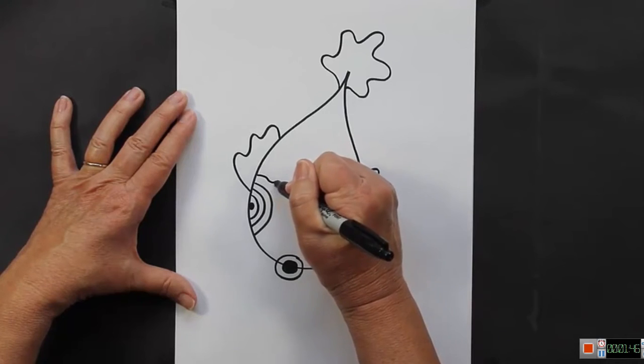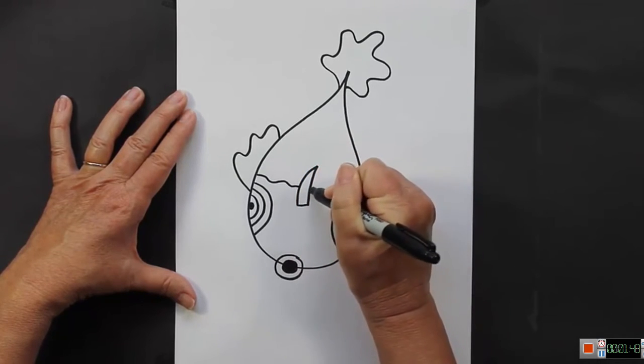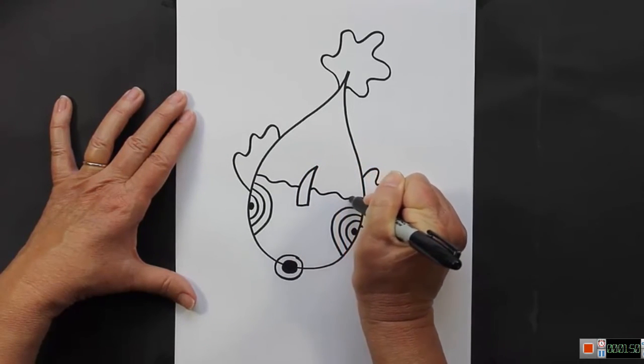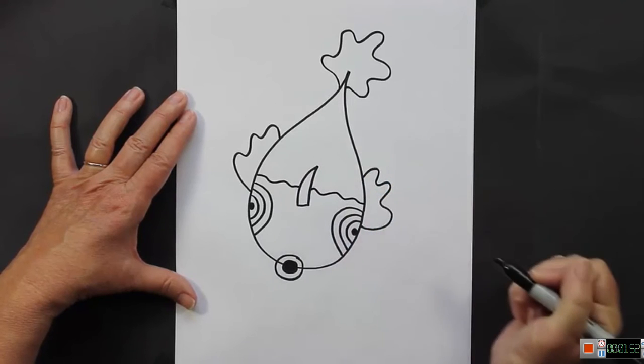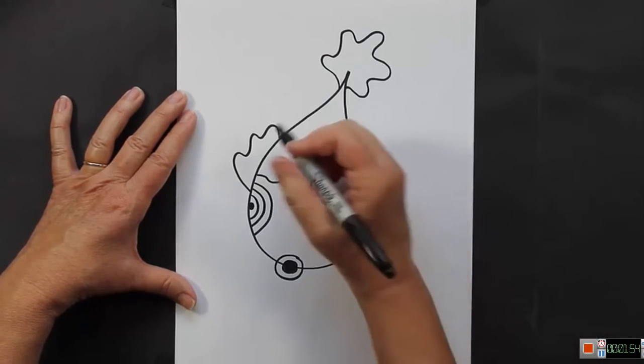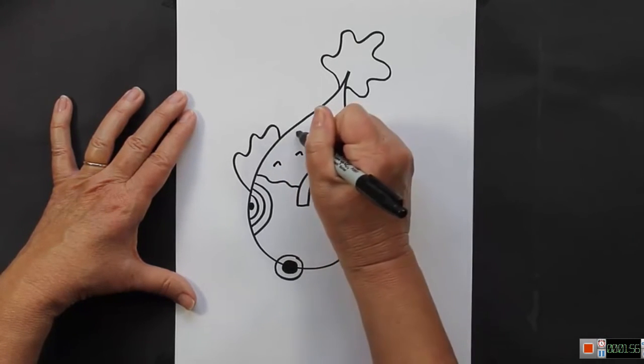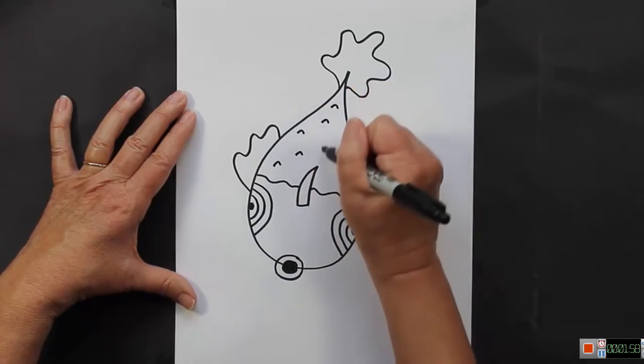And then all along here, pick up your pencil or your pen or your marker. We're going to make a squiggly line. Here we are going to make some fins, which are just little upside down V's.